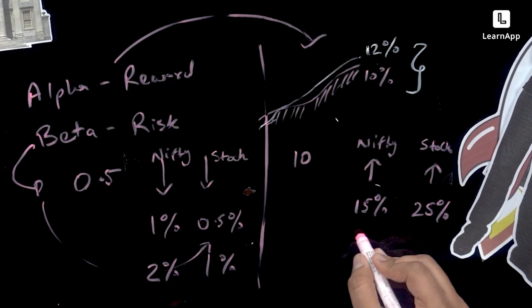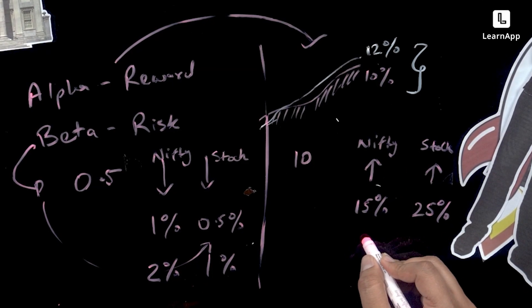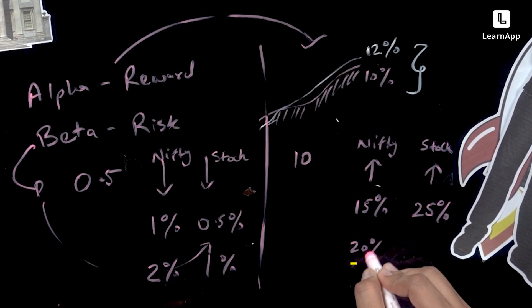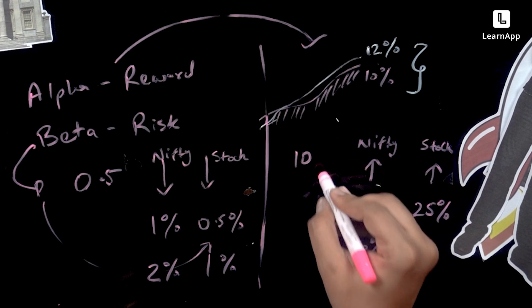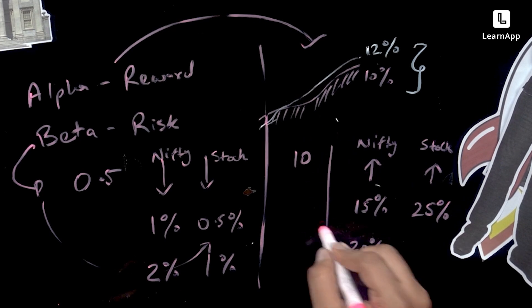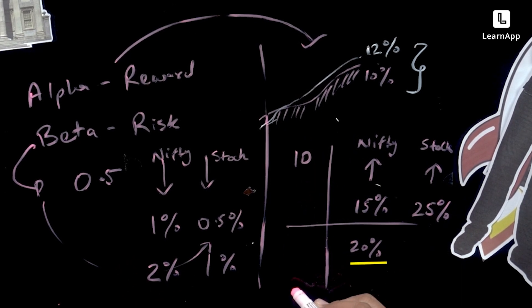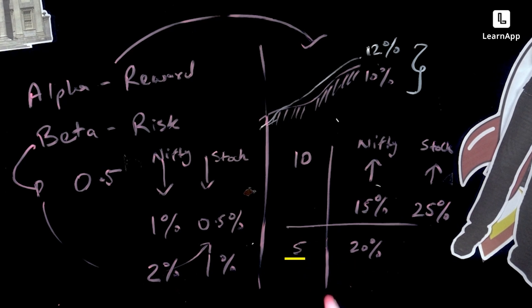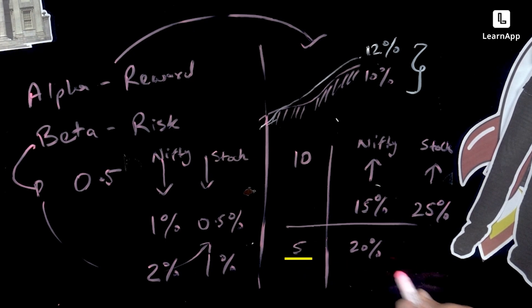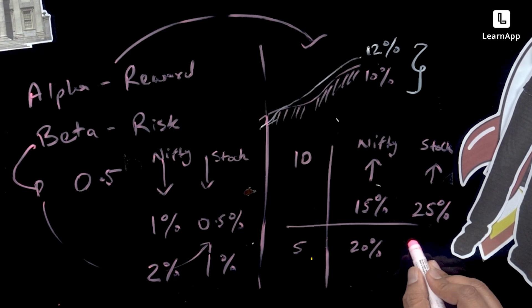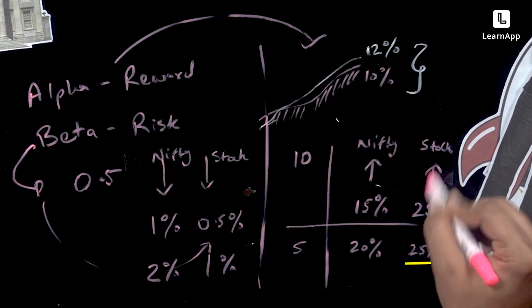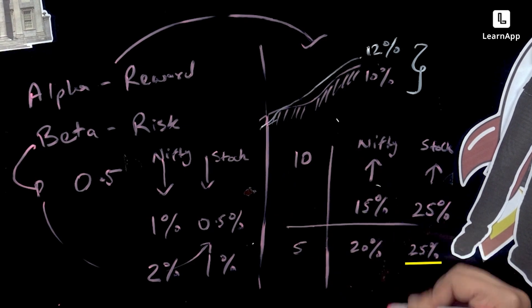Let's do another example. Let's suppose Nifty did 20% and this time we change the alpha to 5. This means the stock has done 25% — same returns, different alpha, because Nifty as the benchmark changed. That's all it is.